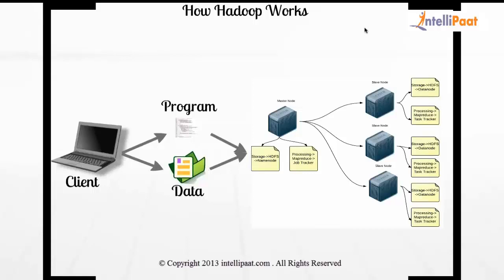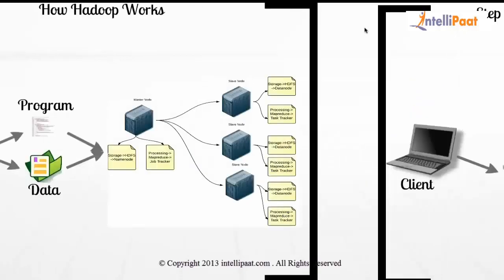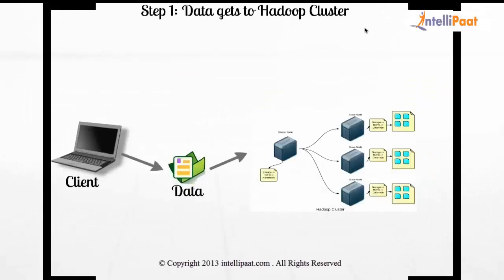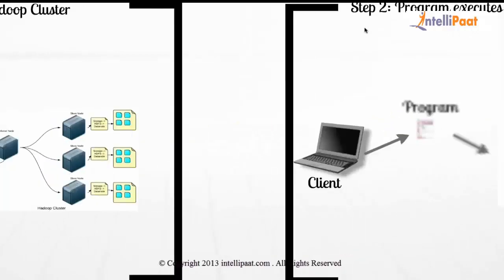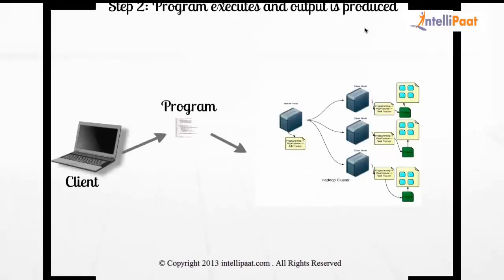When you provide data and a program to Hadoop: first, the data is passed to the NameNode and then eventually gets distributed to all the DataNodes. Then you give your program to the JobTracker — the component taking care of processing. The JobTracker then schedules the program on all the data that is on each local node and gives you the output.